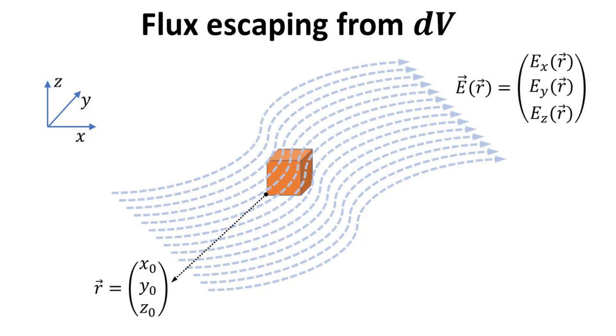In what follows, we want to seek a mathematical expression for the divergence again. The divergence is the amount of vector flux emanating from it. Let's consider an infinitesimal volume, dV, located at the position vector as shown.